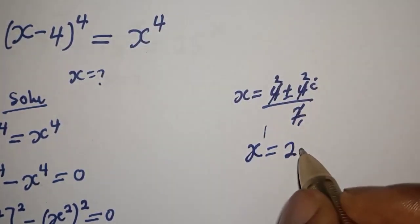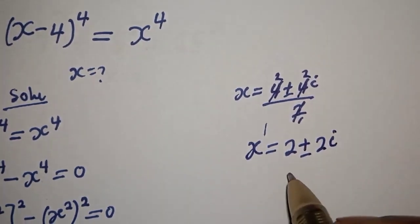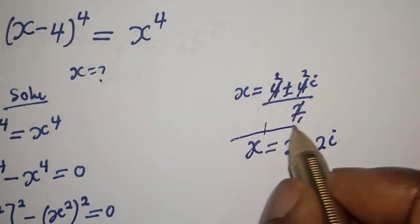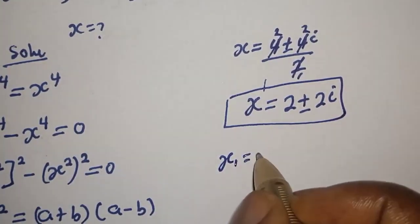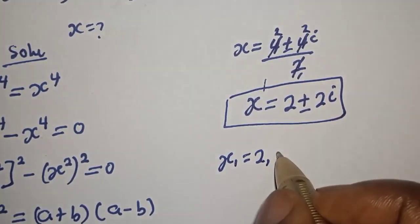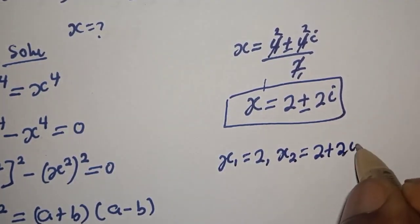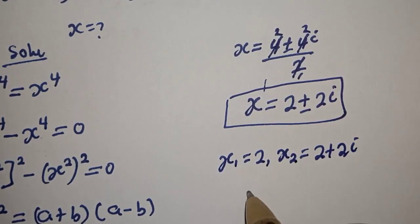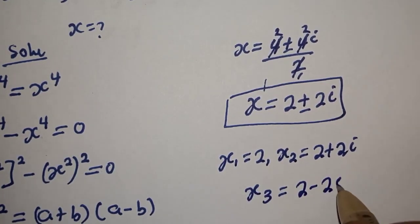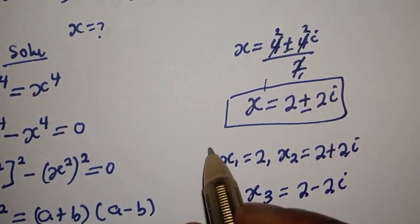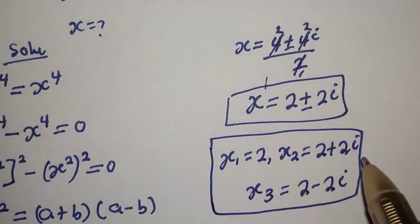Simplifying, s equals 2 plus or minus 2i. Therefore our final answers are: s₁ equals 2, s₂ equals 2 plus 2i, and s₃ equals 2 minus 2i. Thank you for watching. Don't forget to like, share, comment and subscribe to my channel. Bye bye.